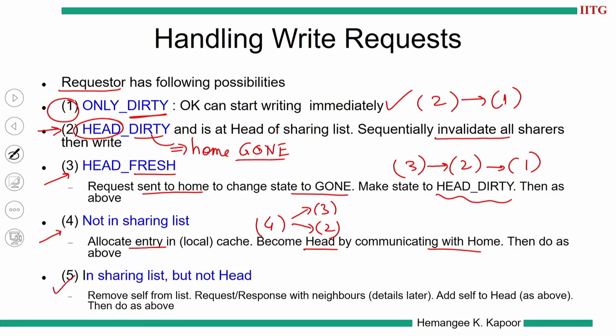Fifth condition: the requester is in the sharing list but not the head node. We have to remove ourselves from the list using the rollout operation by communicating with neighbors using request-response. Once we move out of the list, we add ourselves as the head node and start the above operations. So in state 5, we rollout and go to state 4, then from 4 go to either 2 or 3 and follow the process.